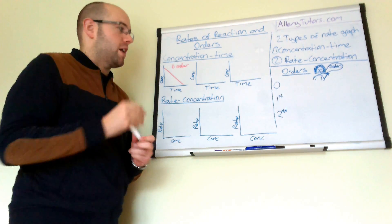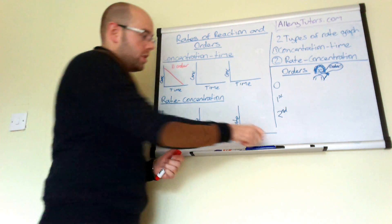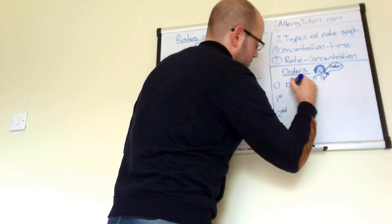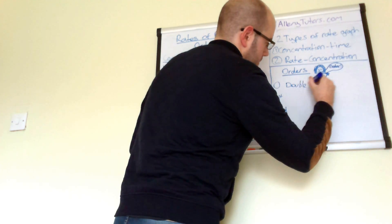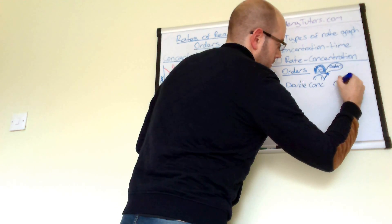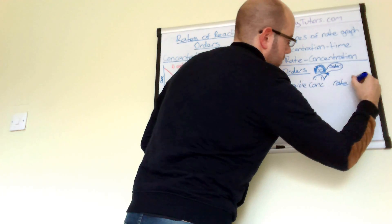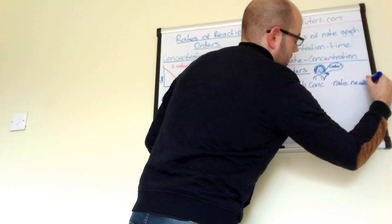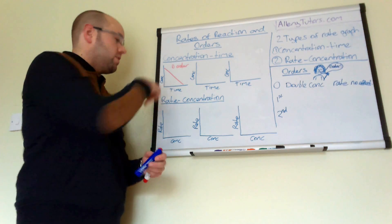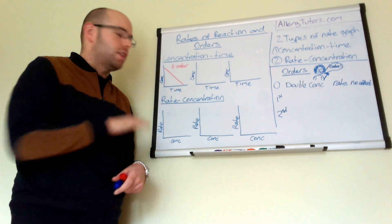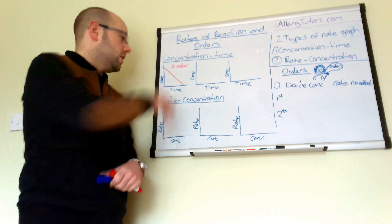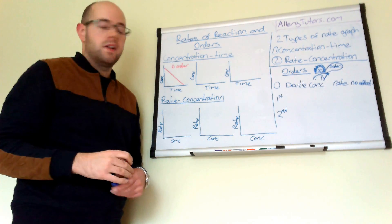Zero order effectively means that if we double the concentration of our reactants, the effect on rate is no effect. We can double the concentration of this reactant as much as we like and that's going to have no effect whatsoever on how quickly this reaction proceeds. That's why we get a straight line on the graph.